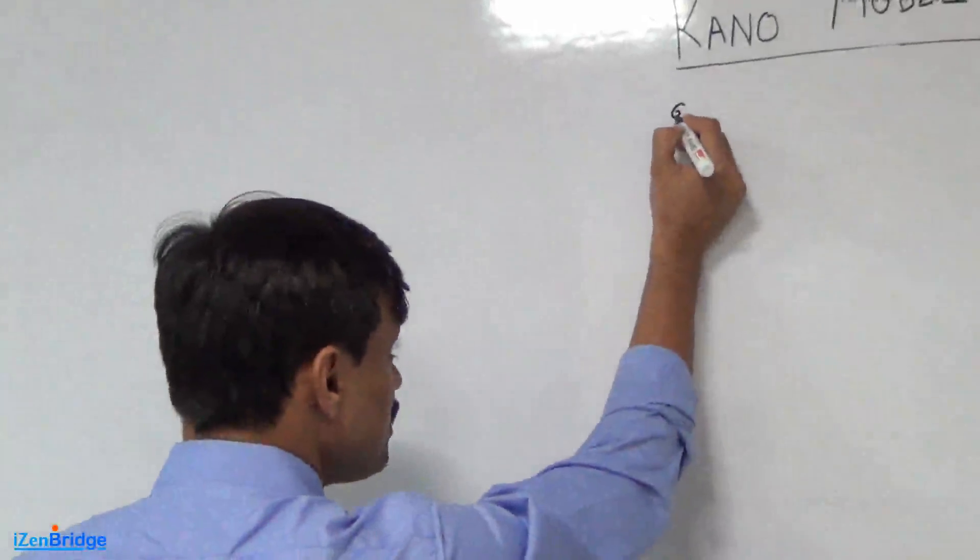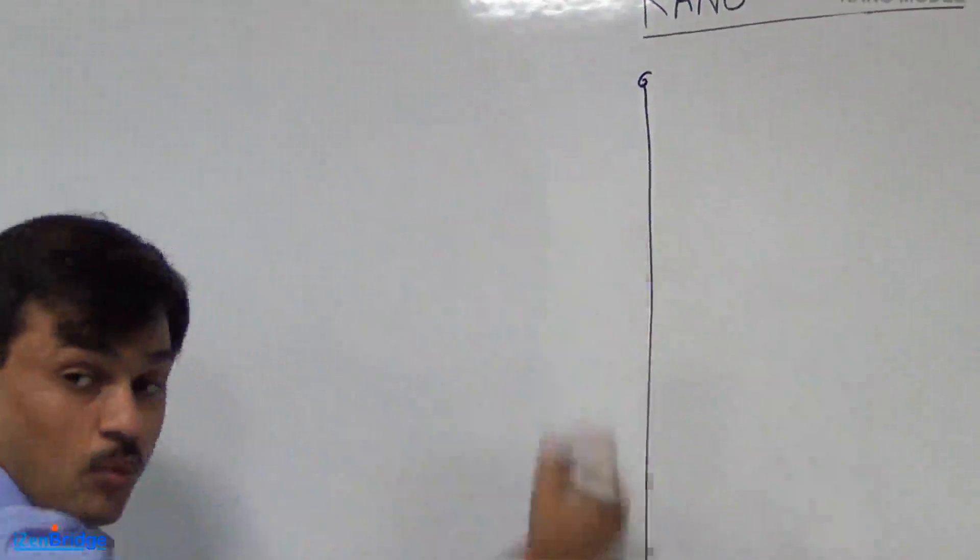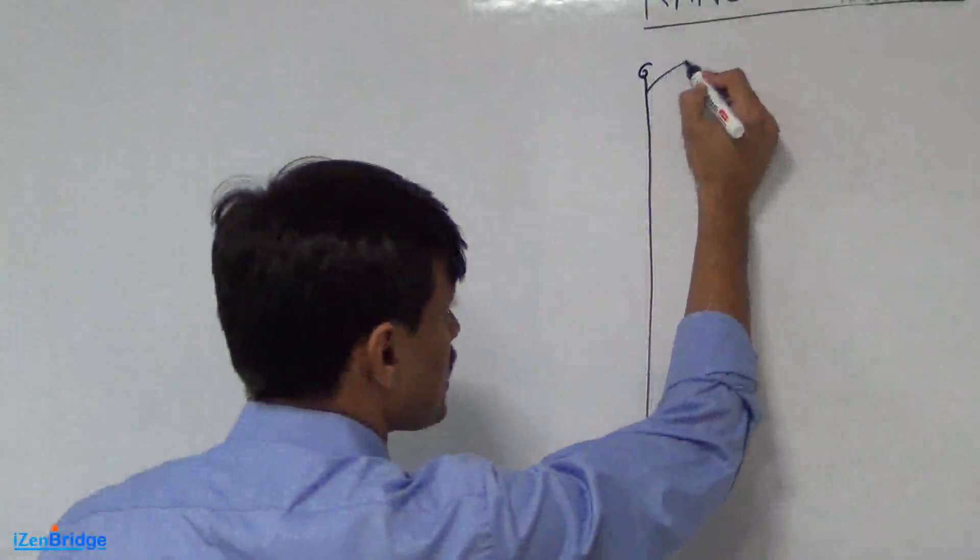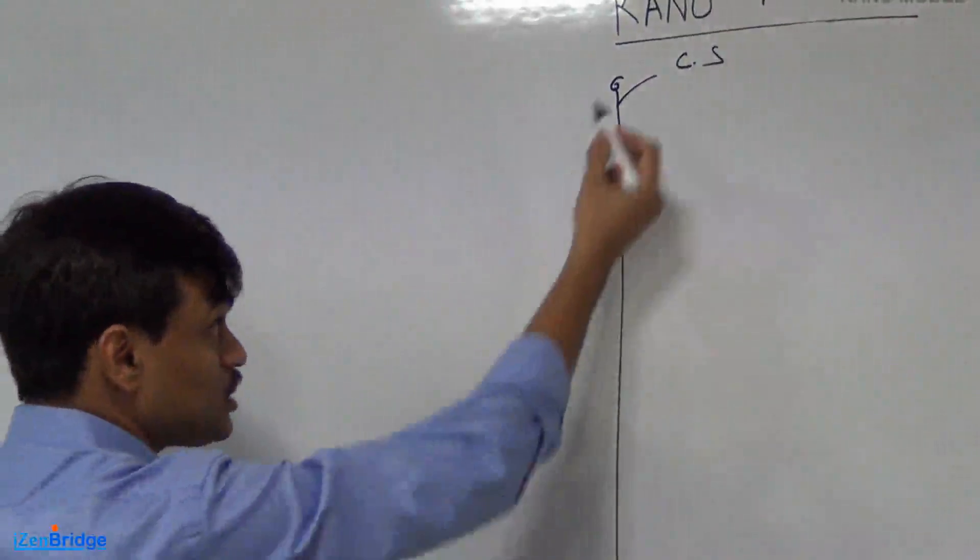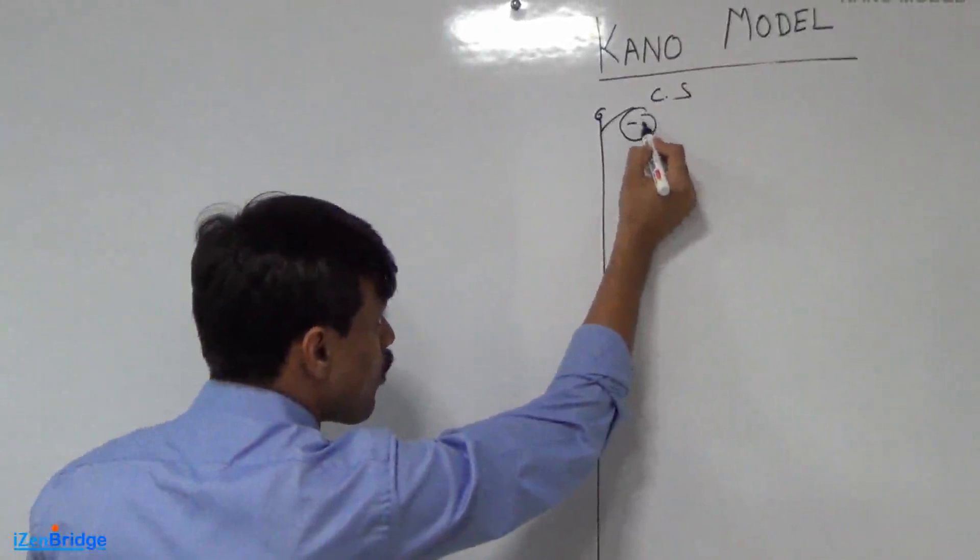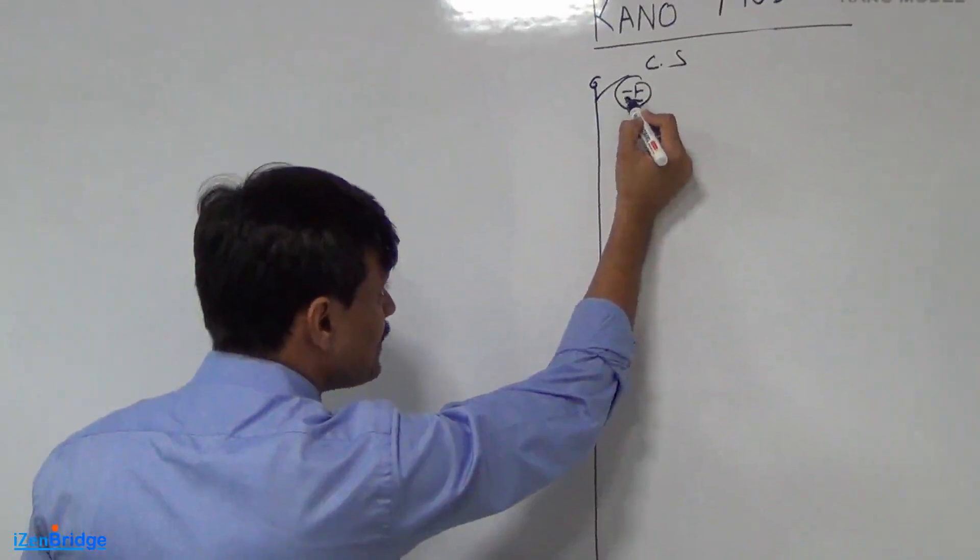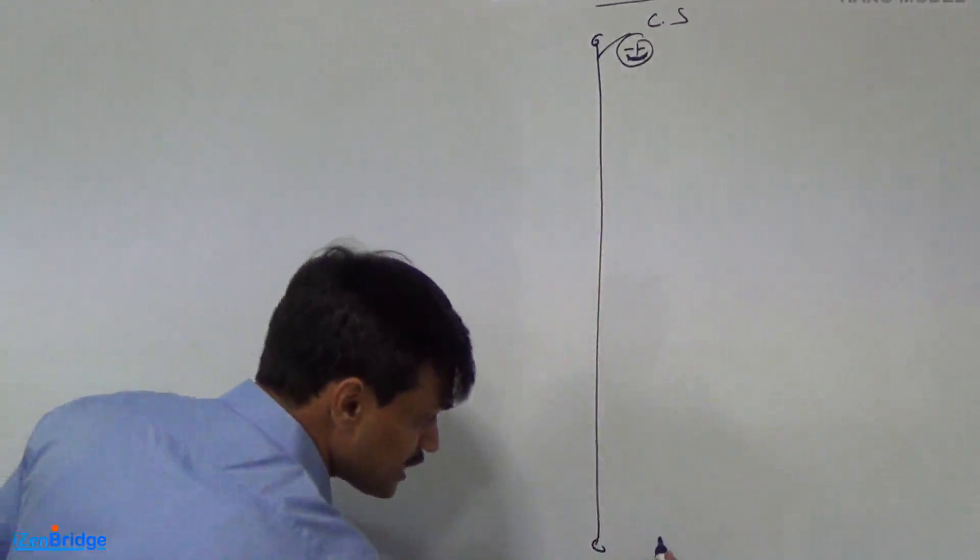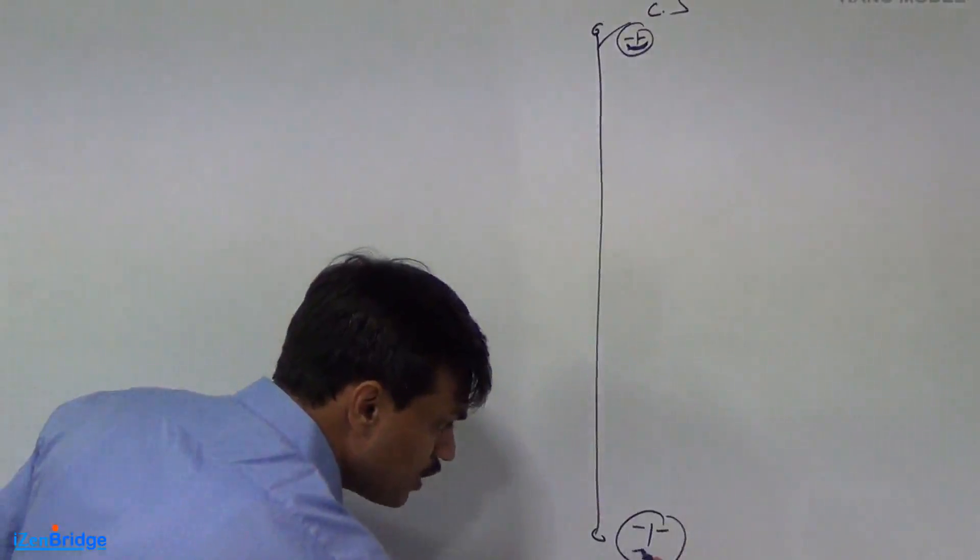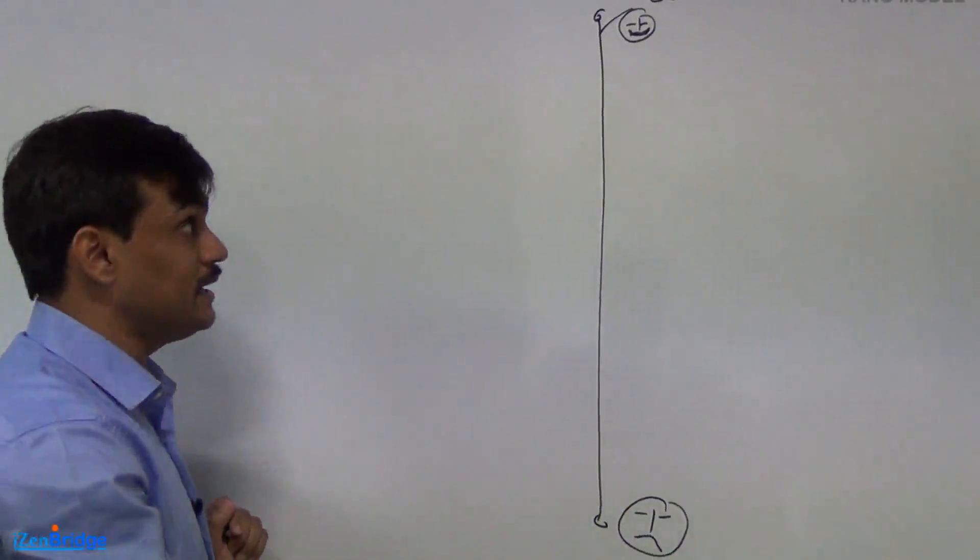This model talks about two dimensions. The one dimension which is represented in a vertical axis represents customer satisfaction. At the top end, we have a very satisfied happy customer. At the bottom end, we have dissatisfied or a sad customer.